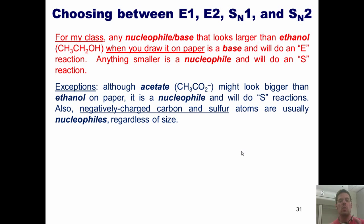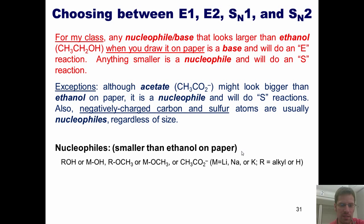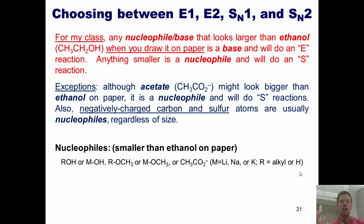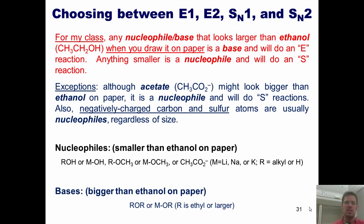Back to our lineup: nucleophiles that are smaller than ethanol on paper will favor substitution reactions — either SN2 or SN1 — depending on whether they're strong or weak. Bases, in contrast, are molecules that look larger than ethanol on paper and will favor elimination reactions.